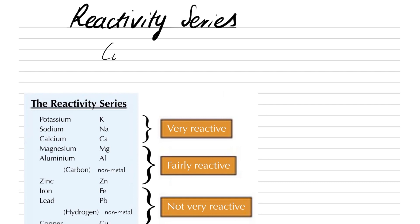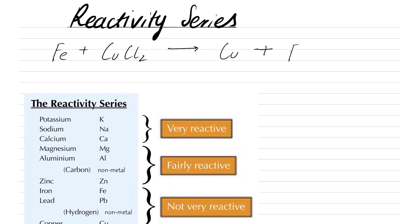So I'm going to write CuCl₂ — which we know is copper chloride. How would I extract this copper? Well, I can react it with iron. If I react it with iron, what do I get? I get Cu by itself — the copper by itself — plus the iron chloride.